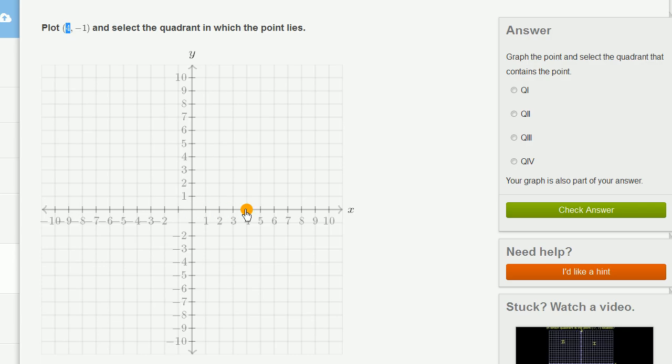So I'm going to go 4 to the right. And then the second coordinate says, what do we do in the vertical direction or in the y-direction? It's a negative 1. Since it's negative, we're going to go down. And it's a negative 1, so we're going to go down 1. So that right over there is the point 4 comma negative 1.